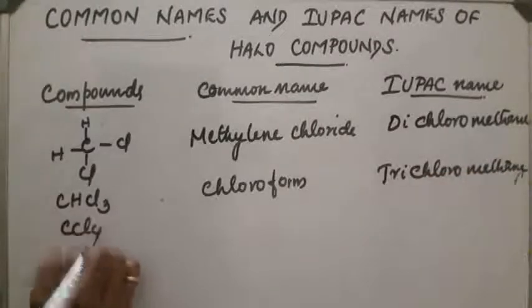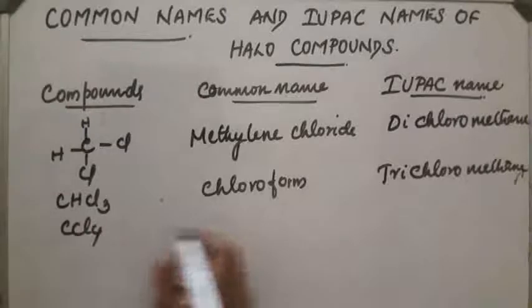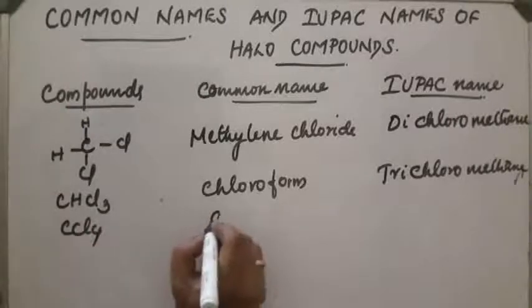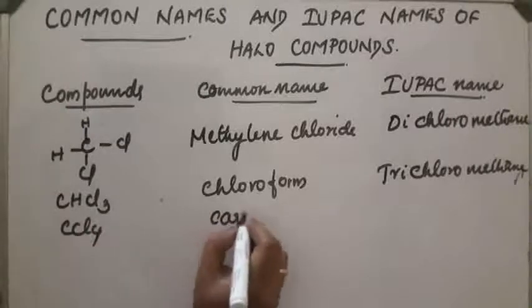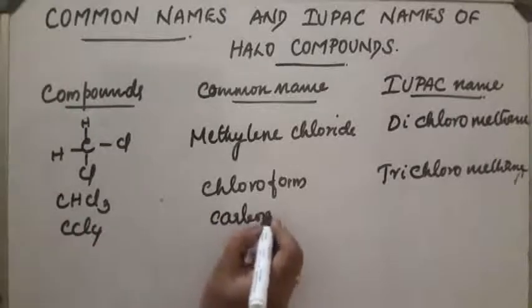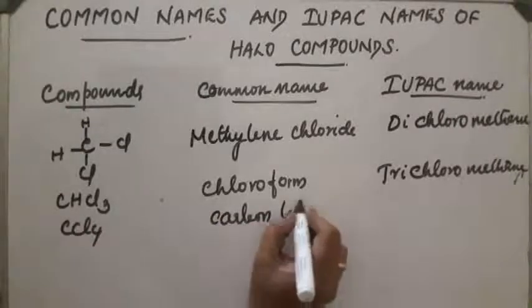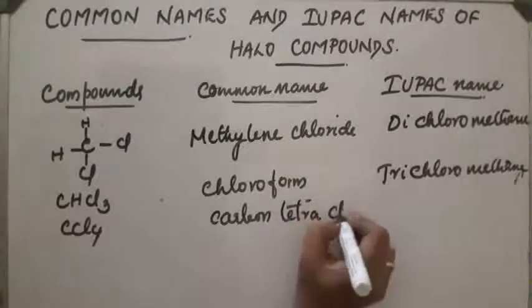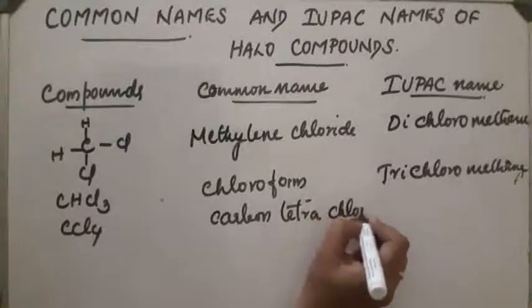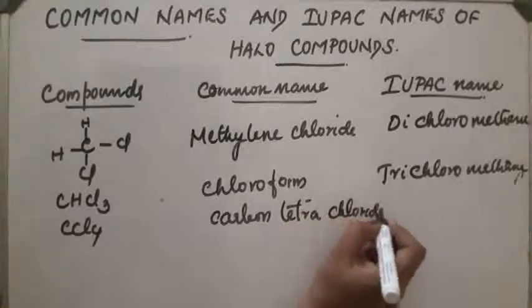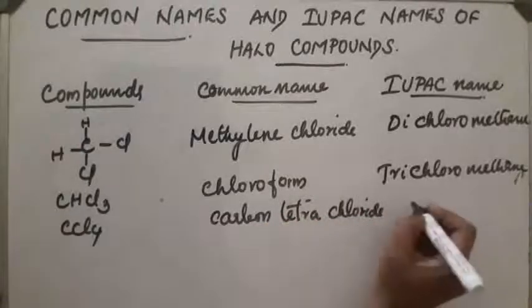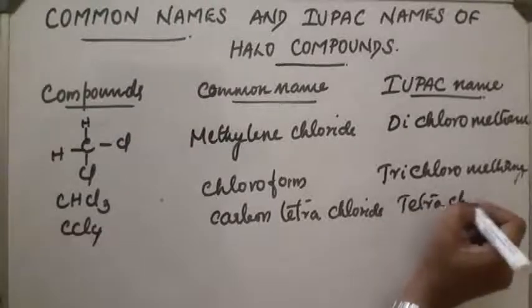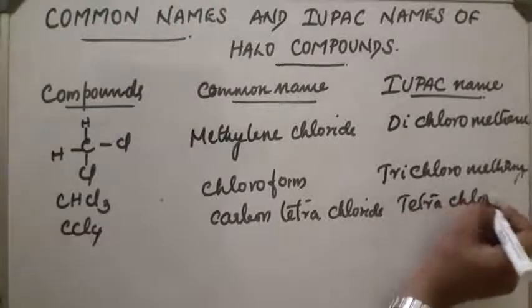Next compound: CCl4, which is carbon tetrachloride. Its IUPAC name is tetrachloromethane.